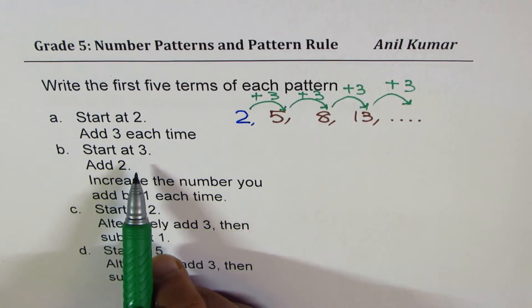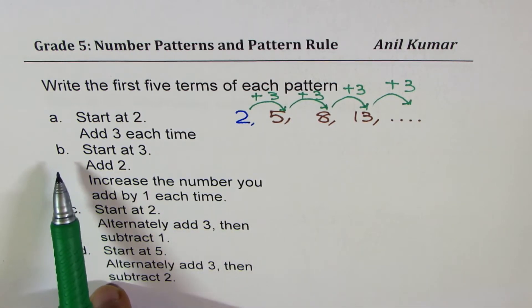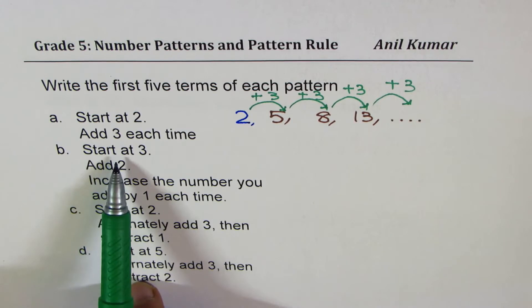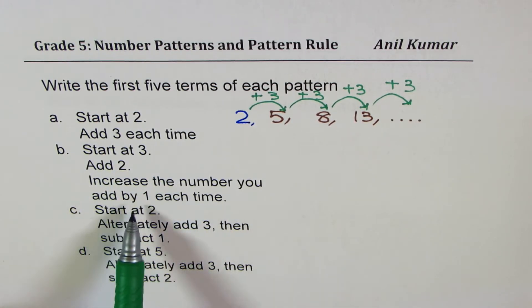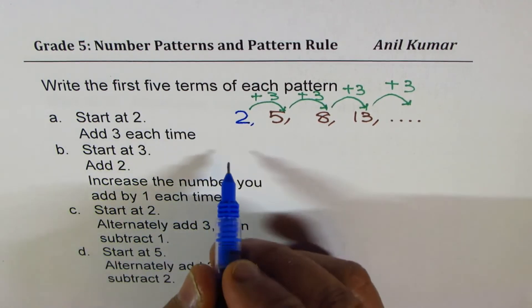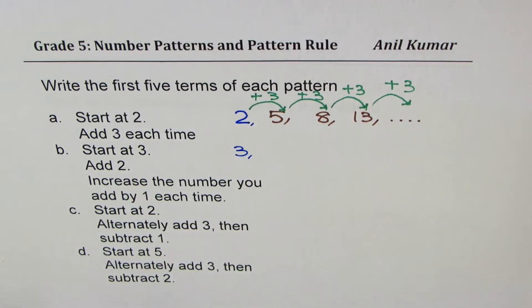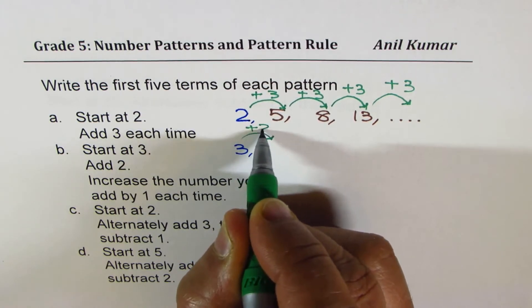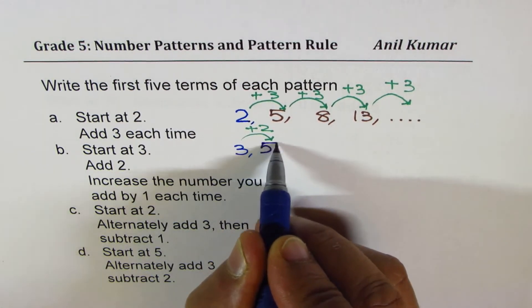Now this is where it becomes kind of tricky. We have to try and understand part B. It says: start at three, add two, increase the number you add by one each time. So we begin with three — start at three. Then add two, so three plus two is five.